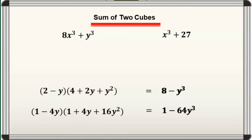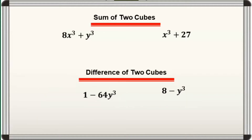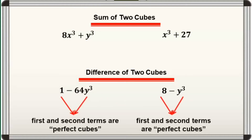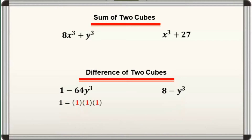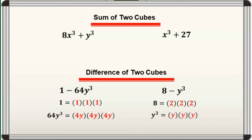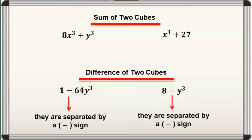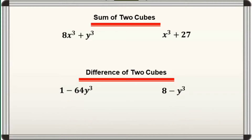The other two results are the following, na kung saan ang right-side expression ay tinatawag nating difference of two cubes. Ang kanilang first and second terms ay perfect cubes. For instance, in the first one, 1 is equal to 1 times 1 times 1, and 64y cubed is equal to 4y times 4y times 4y. And for the second one, 8 is equal to 2 times 2 times 2, and y cubed is equal to y times y times y. Moreover, yung dalawang terms ay separated ng minus sign. Having the idea that a sum or difference of two cubes resulted from multiplying a binomial and trinomial, meron na tayong idea kung paano ipa-factor ang mga ganitong klaseng polynomials by simply reversing the process.